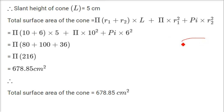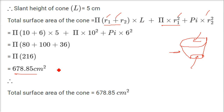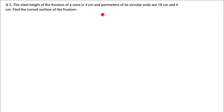Now we can compute the total surface area. Since it is not a bucket, it includes all three parts: π(r1 + r2)·L + π·r1² + π·r2². With r1 = 10, r2 = 6, and L = 5, the total surface area comes out as 678.85 cm².